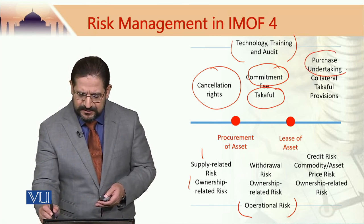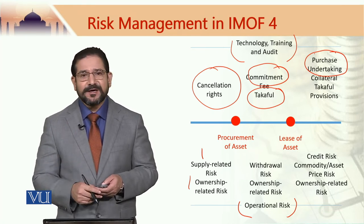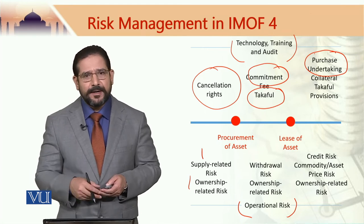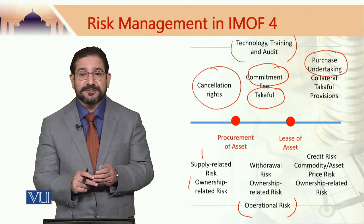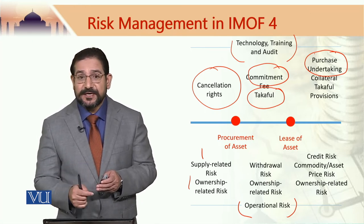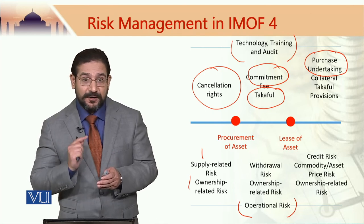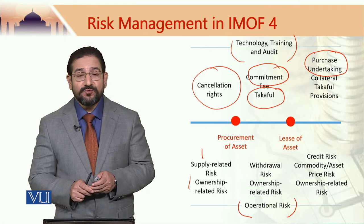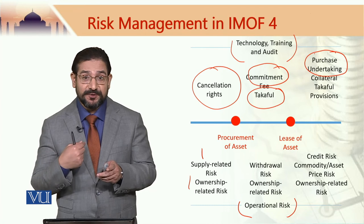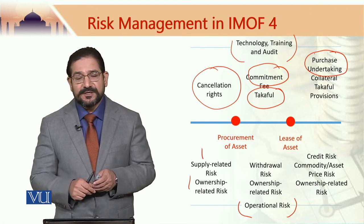Regarding purchase undertaking in the context of credit risk — this is different from purchase undertaking in Murabaha. If the customer defaults and does not want to go ahead, in Ijara Muntahiyah Bit Tamliq and Ijara there is a purchase undertaking signed by the customer, which states that in the event of default at any point in time, the customer undertakes to buy the asset from the bank for a price determined by the outstanding amount pursuant to the lease agreement. This is a binding promise and a very good risk-mitigating tool.